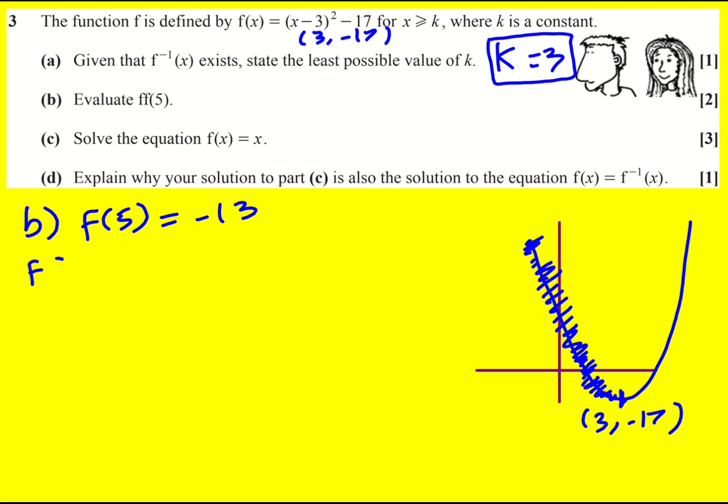Now it might be very tempting to then do f of f of 5, which is f of minus 13, and that bit is okay. But at this point you're meant to realize that actually this is not possible because we've just said that x has to be greater or equal to k.